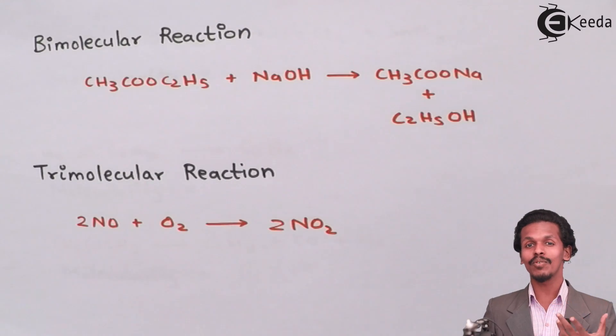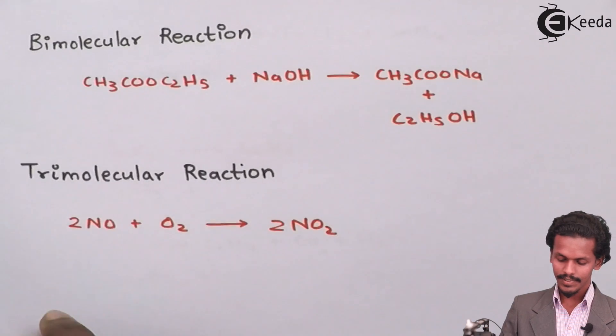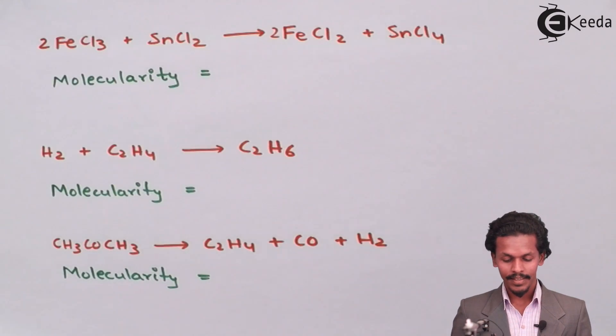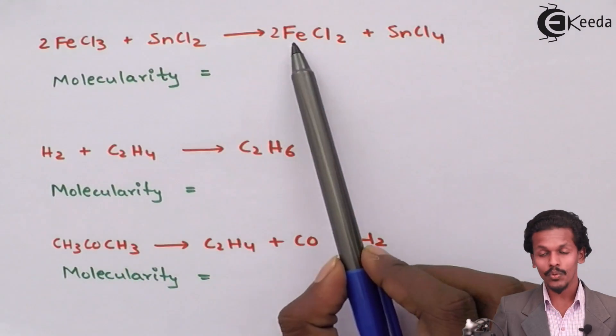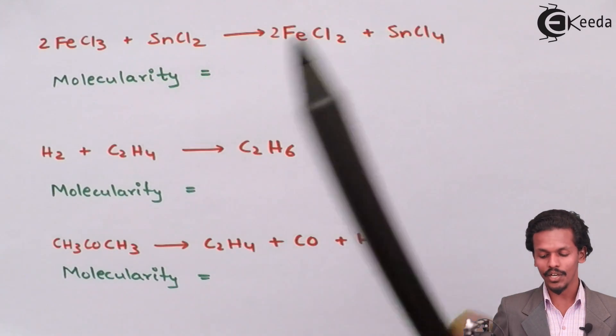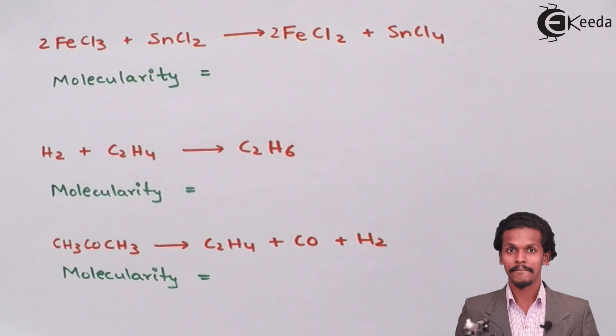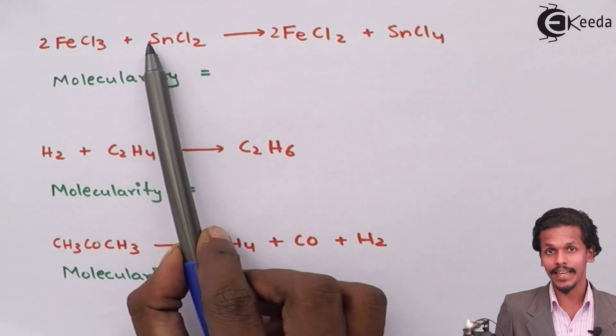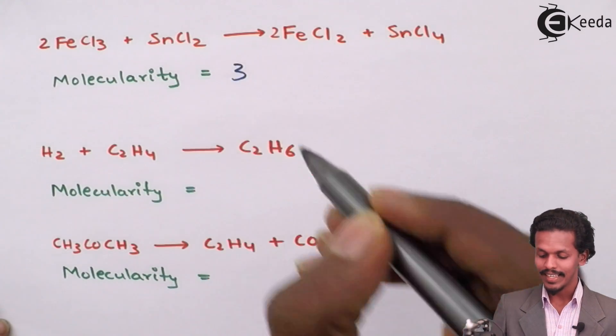I've given a few examples to you. Let us see whether you could predict that or not. It would be very simple. Two times ferric chloride plus stannous chloride will give you two times FeCl2 plus SnCl4. Can you tell what would be the molecularity of the reaction? Yes, it would be two moles plus one mole of stannous chloride that makes three. So the molecularity of this reaction is three.